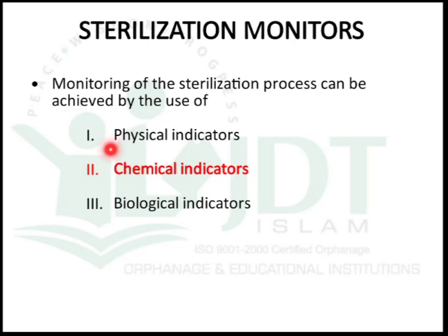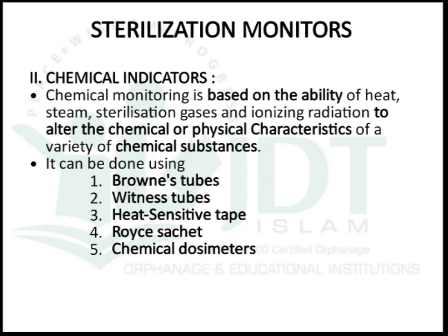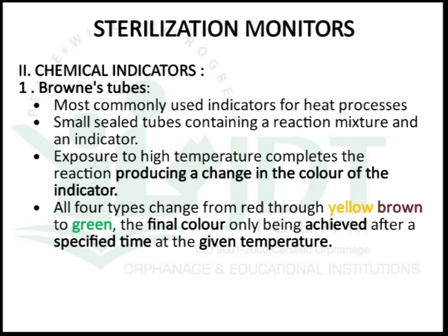Chemical monitoring is based on the ability of heat, steam sterilization, gas, and ionizing radiation to alter a chemical or physical characteristic of a variety of chemical substances. We can use Brown's tubes and heat-sensitive tape, which are the most commonly used indicators in heat processes.